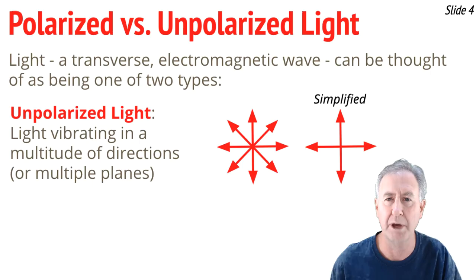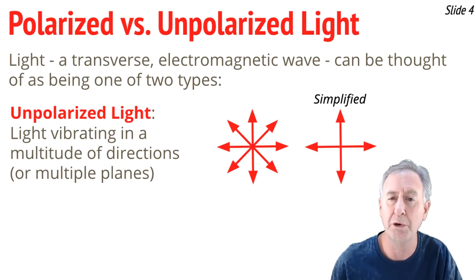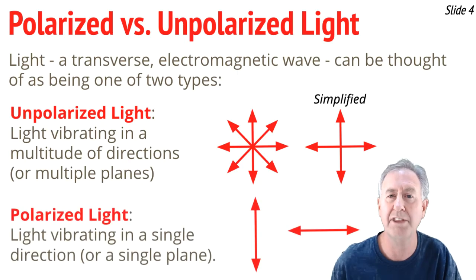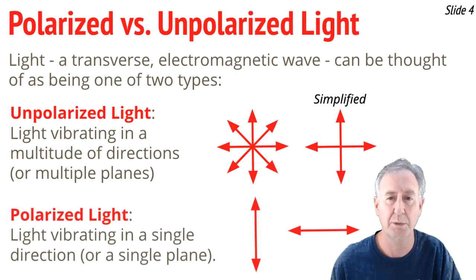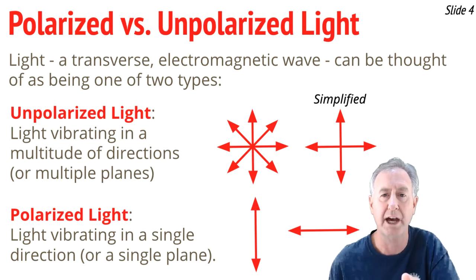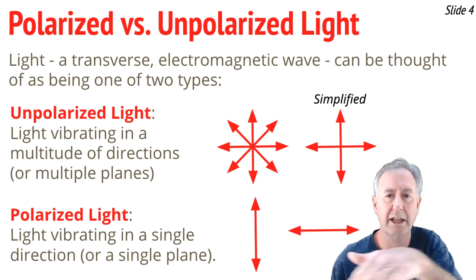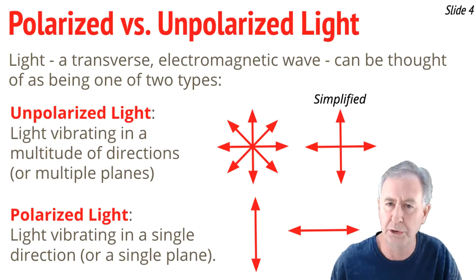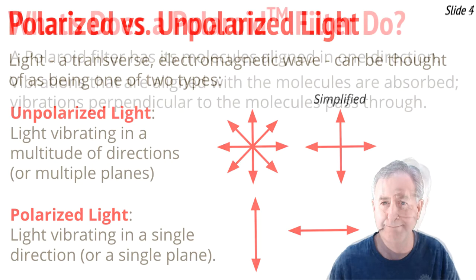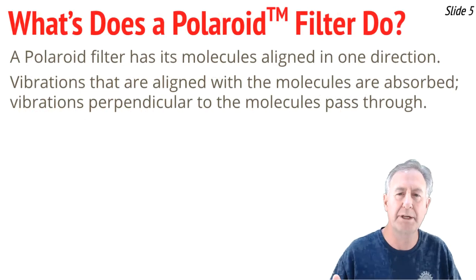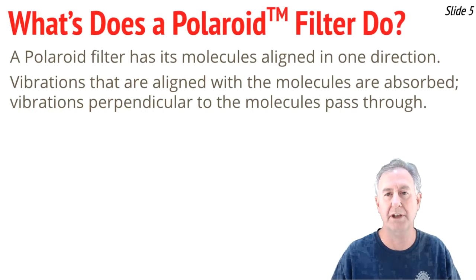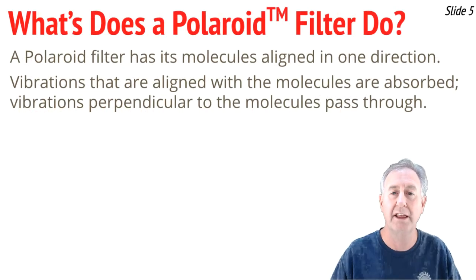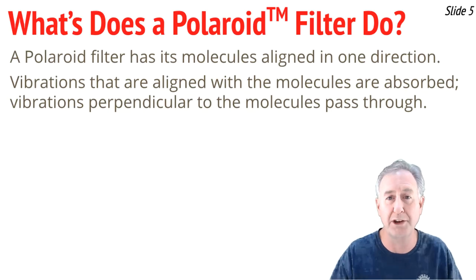A polarized light wave is quite different than an unpolarized light wave. When you have a polarized light wave, you have light that's vibrating in a single plane. To keep it simple, maybe it's vibrating up and down, or maybe it's vibrating left to right, but only in one plane at a time — not in a multitude of planes. Light from a typical source comes to us as unpolarized light, vibrating in a multitude of directions.